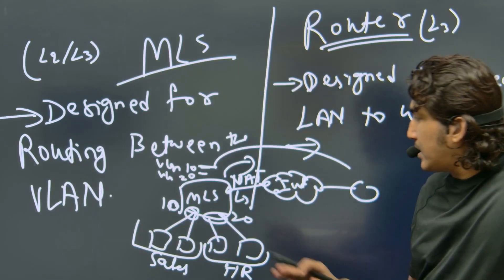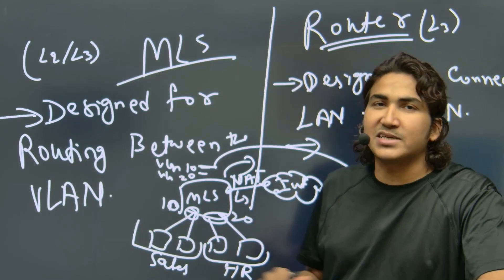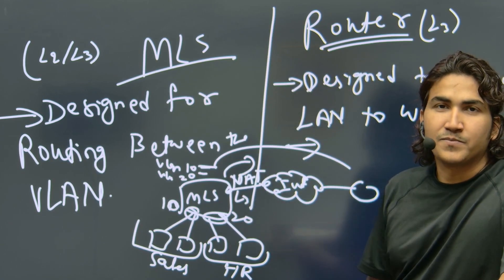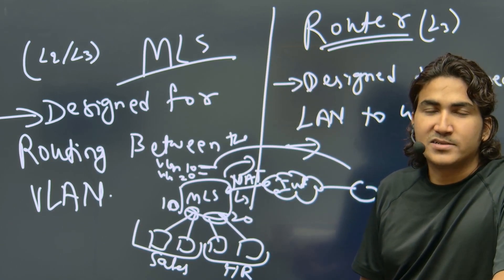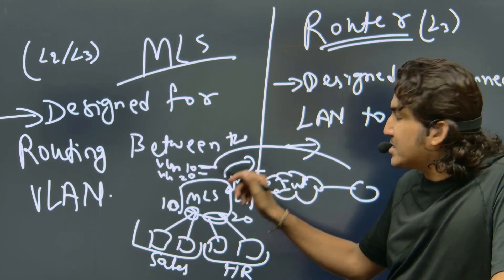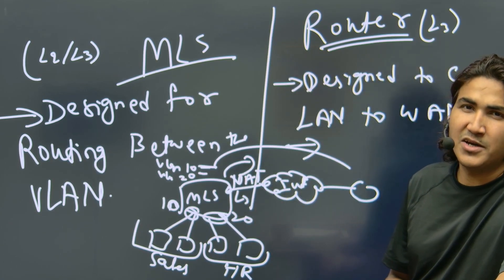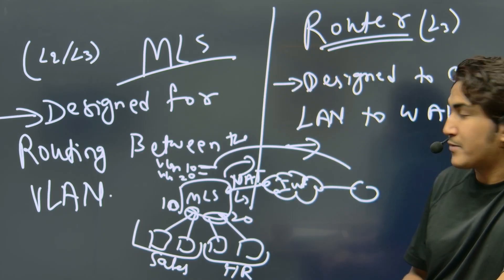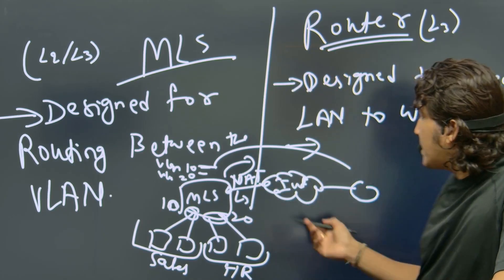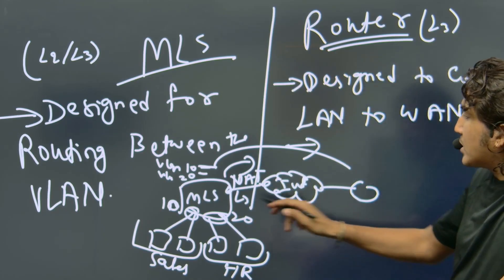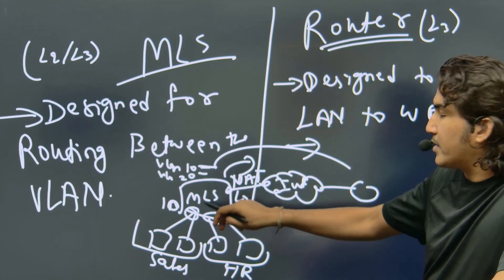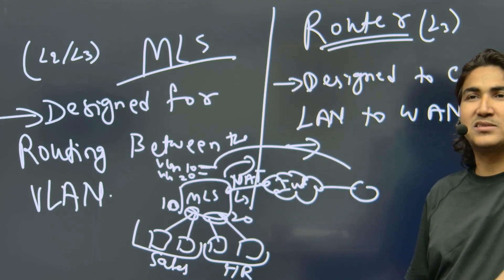In a small organization this is fine, but in enterprises you will generally use a router on the WAN. There are some limitations of multi-layer switch — we cannot use it everywhere. What is the benefit of using a router instead of MLS on the WAN?